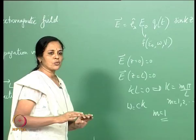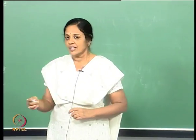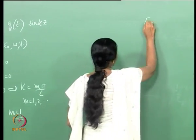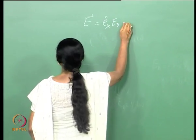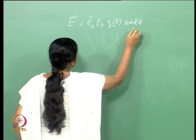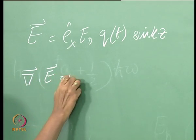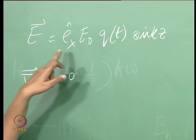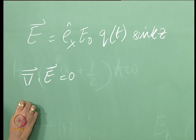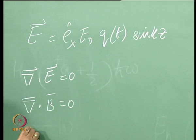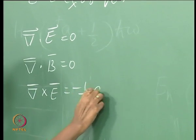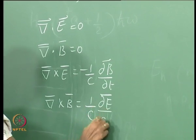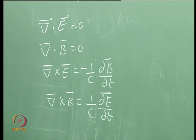This problem has a one-to-one correspondence with the linear harmonic oscillator problem, and that is the mapping we will see right now. In general I write the electromagnetic field E as E_x times E0 times q(t) times sin(kz). Looking at Maxwell's equations: del dot E equals 0 is automatically satisfied here because E is along the x axis and is a function of z. Del dot B equals 0, and del cross E equals minus 1/c times delta B over delta t. I am assuming there are no free charges or currents — these are the source-free Maxwell equations.